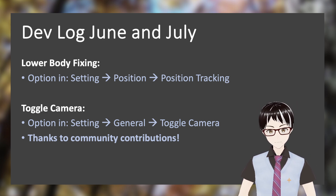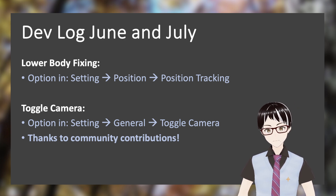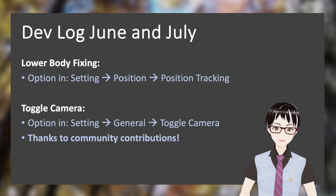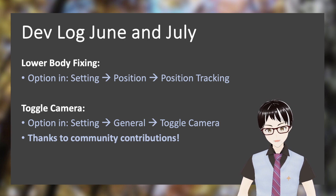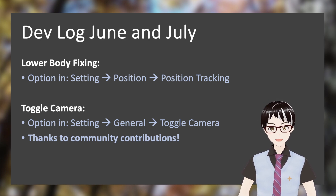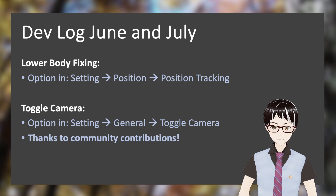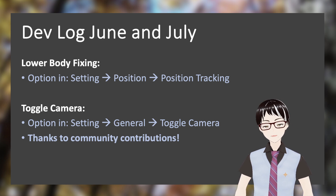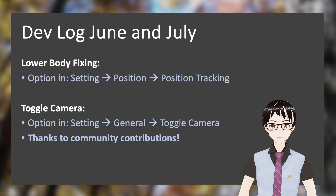If you disable position tracking — which was previously not allowed — you will see that the model is not moving too much. In fact, the legs will be completely fixed to the ground, so the model will not move so vividly.